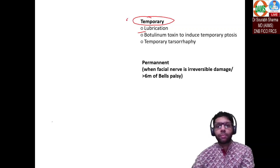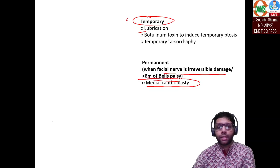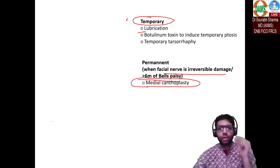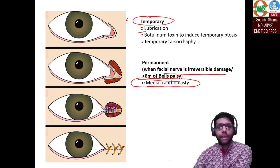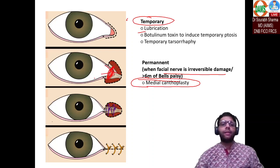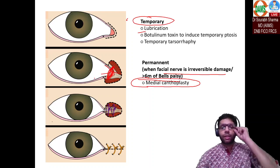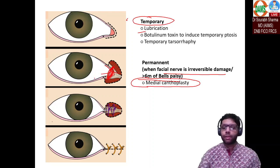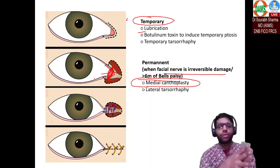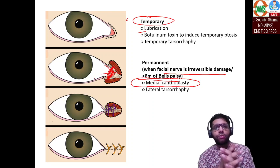If facial nerve palsy is irreversible or takes more than six months to recover, you can do permanent tarsorrhaphy or medial canthoplasty. Medial canthoplasty means suturing the two limbs of the medial canthal tendon so the eyes are partially closed from the medial side — acting like a medial tarsorrhaphy. Similarly, a lateral tarsorrhaphy can be done.